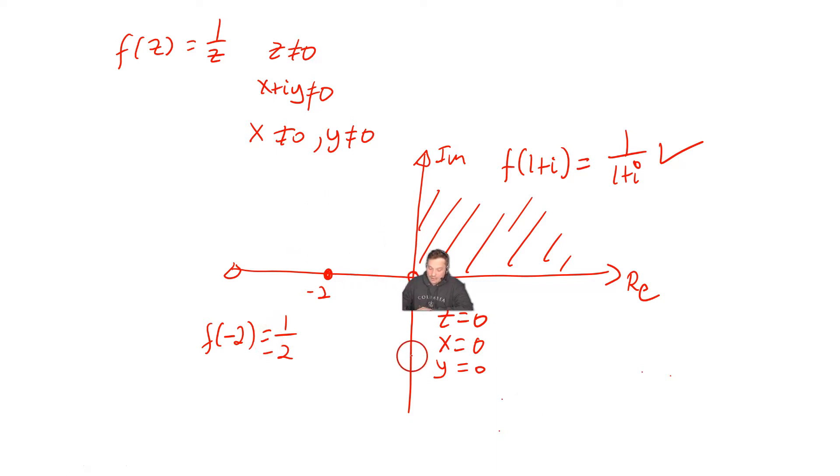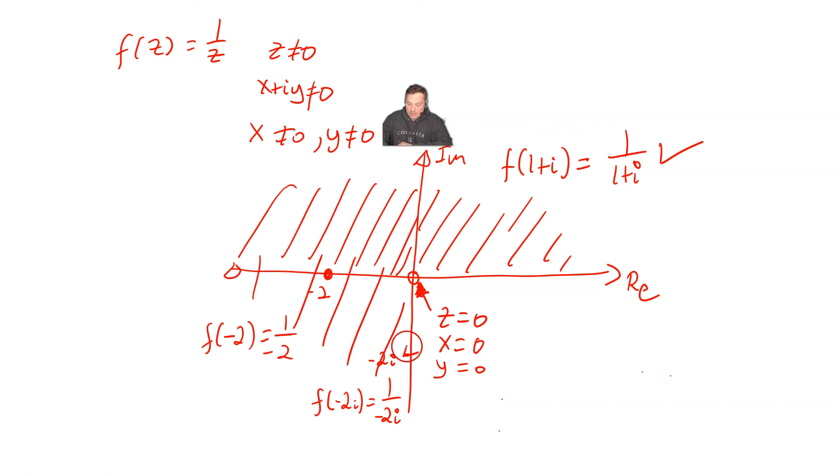If you wanted, you could plug in a value, for example, here. Say this is -2i. You can plug that into the function too, no problem. It's going to give you f(-2i) = 1/(-2i). I'm not showing you the plane that represents the output values. I'm just showing you that it's possible to plug in anything except the origin. And that's it.